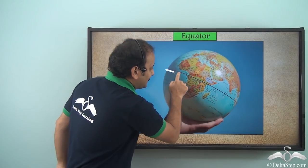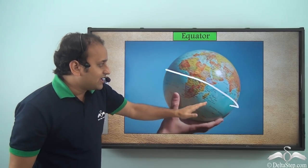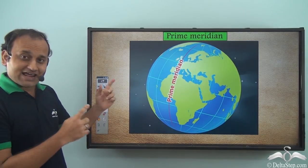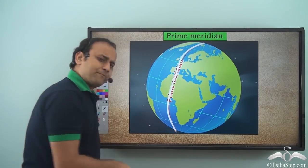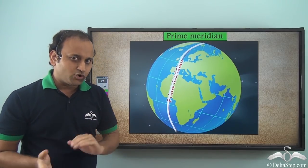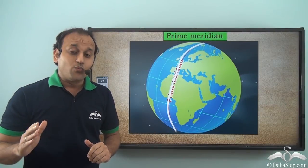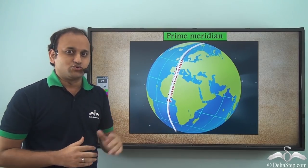The most important line is the equator. The equator divides the entire earth into two equal halves. Similarly, there is another line called the prime meridian, which also divides the earth into two equal halves. The difference is that the equator divides the earth horizontally while the prime meridian divides the earth vertically.